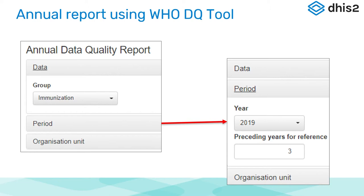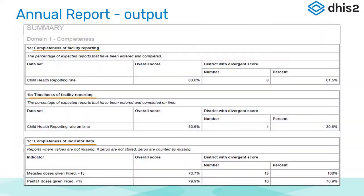You then select the organization unit. This could be the whole country, sub-level, sub-national, or sub-national times two. The choice again is always yours. You will then get a report that is completed and it will show up in the WHODQ tool.